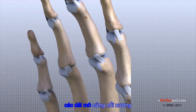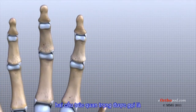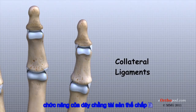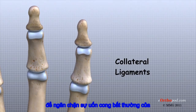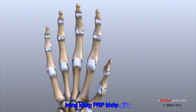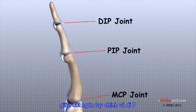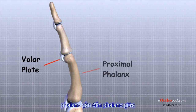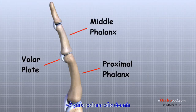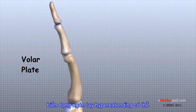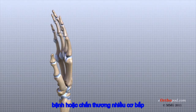Ligaments are tough bands of tissue that connect bones together. Two important structures called collateral ligaments are found on either side of each finger and thumb joint. The function of the collateral ligaments is to prevent abnormal sideways bending of each joint. In the PIP joint — the middle joint between the main knuckle and the DIP joint — the strongest ligament is the volar plate. This ligament connects the proximal phalanx to the middle phalanx on the palmar side of the joint. The ligament tightens as the joint is straightened and keeps the PIP joint from bending back too far or hyperextending. Finger deformities can occur when the volar plate loosens from disease or injury.